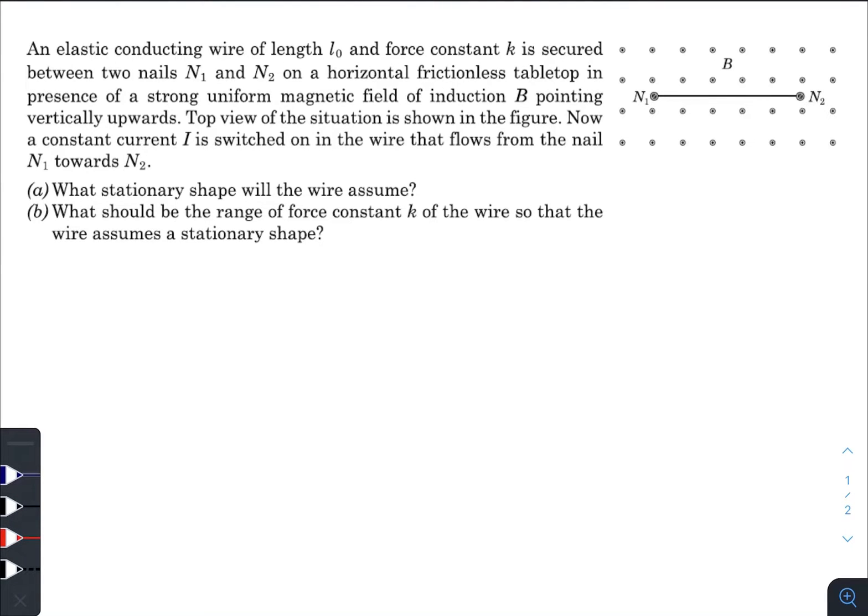In today's question we have an elastic conducting wire of length l₀ and force constant k secured between two nails N₁ and N₂ on a horizontal frictionless tabletop in presence of a strong uniform magnetic field of induction B pointing vertically upwards.